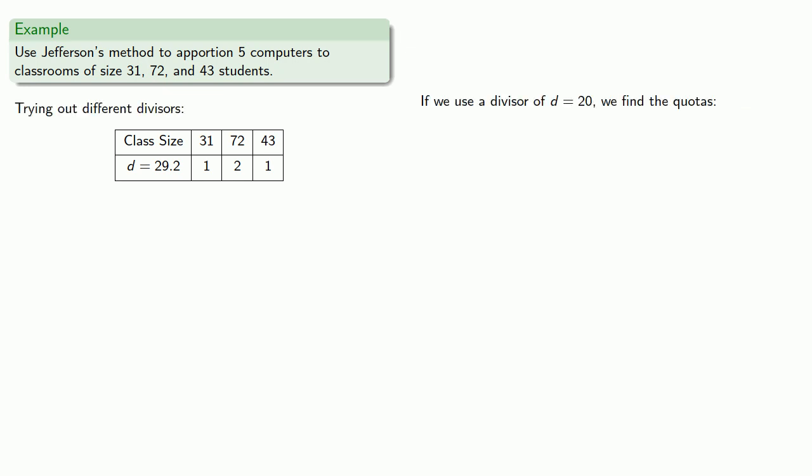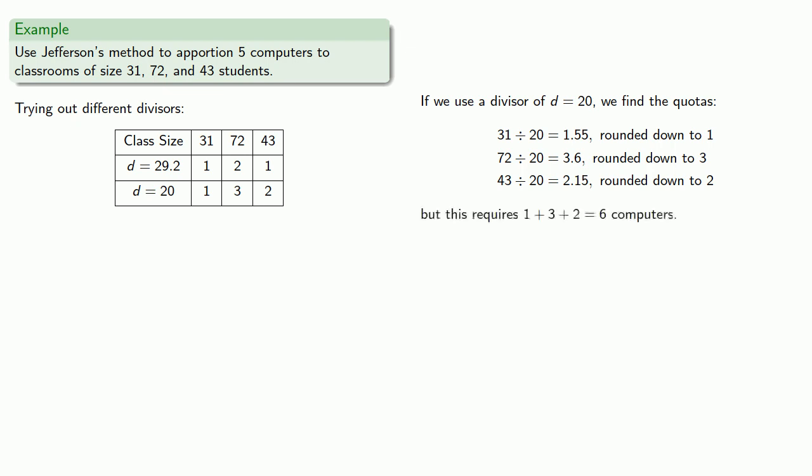If we use a divisor of d equals 20, we find our quotas by dividing the class sizes by 20 and rounding down. This would allocate one, three, and two computers. But this requires six computers, and we only have five. So our divisor is too small, so we'll choose another.